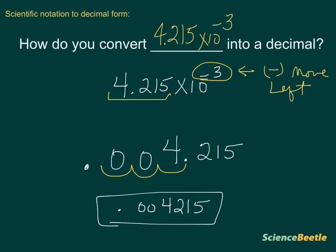Here is your final answer when you convert 4.215 times 10 to the negative 3 to decimal form. Hopefully this was helpful for you. Go ahead and subscribe. If you have any questions, see me in class.